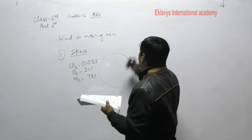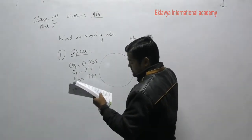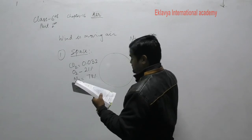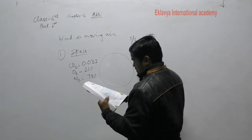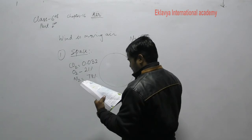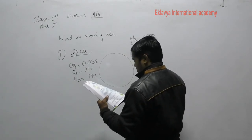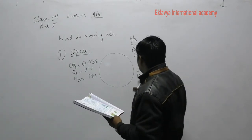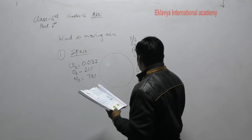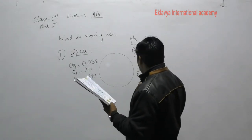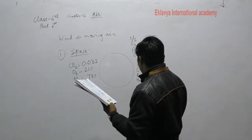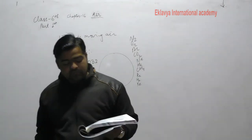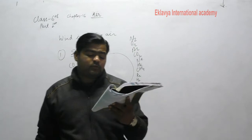The gases clearly listed in the book are: N2 (nitrogen), O2 (oxygen), CO2 (carbon dioxide), neon, helium, methane, krypton, hydrogen, and xenon. All these gases are present in the atmosphere.